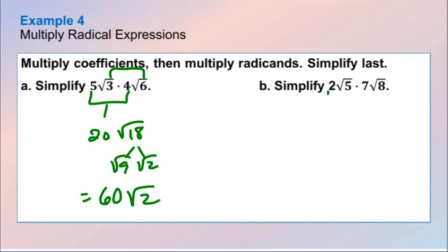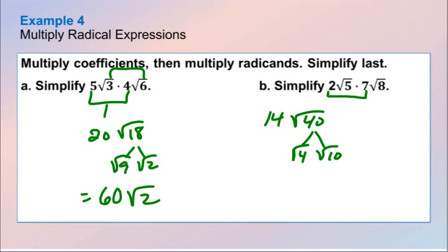Next: 2 times 7 is 14, and the square root of 40. I can break that down as the square root of 4 times the square root of 10, which gives us an answer of 28 square root of 10.